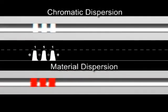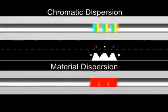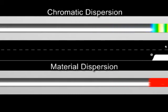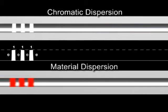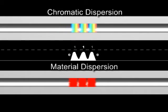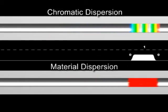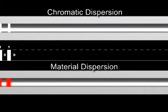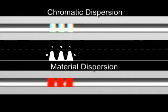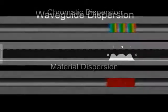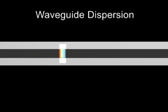Dispersion is the gradual spreading of an optical pulse as it travels along a fiber. There are several types of optical signal dispersion. For single mode fiber, these include chromatic dispersion caused by wide spectral widths of the light source, material dispersion caused by the fiber itself, and waveguide dispersion caused by the differing speeds of light in the core and cladding.